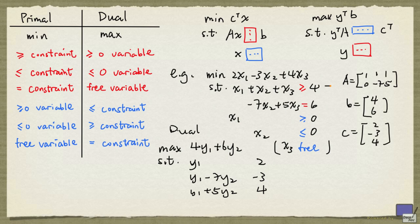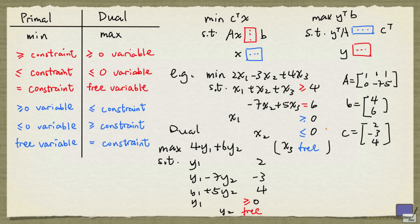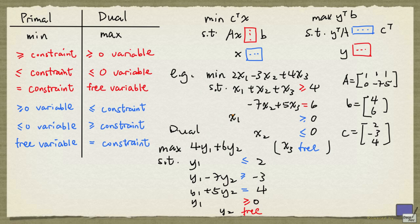For the dual variable types: the first primal constraint is a greater-than-or-equal-to constraint, so y₁ is a non-negative variable. The second is an equality constraint, so y₂ is a free variable. We now fill in the constraint directions. The first dual constraint corresponds to x₁ ≥ 0, so it is a less-than-or-equal-to constraint. The second corresponds to x₂ ≤ 0, so it is a greater-than-or-equal-to constraint. And since x₃ is free, the third constraint is an equality. This gives us the complete dual problem, and weak duality and strong duality both apply to this primal-dual pair.